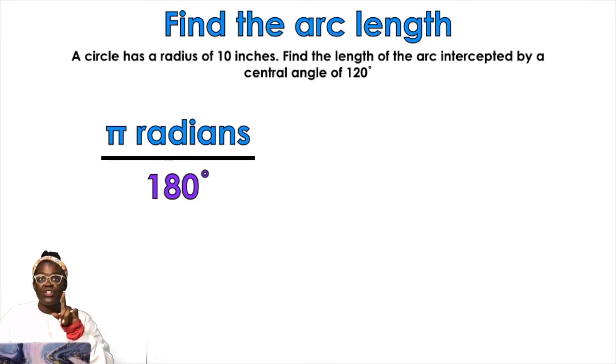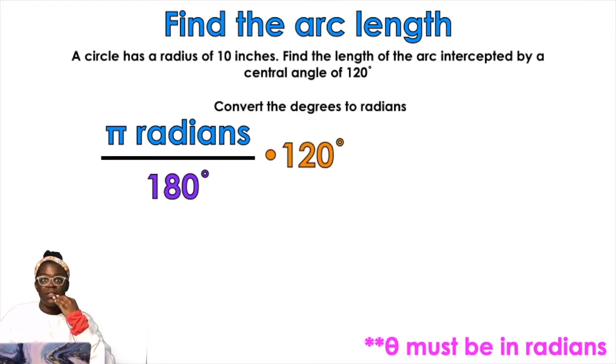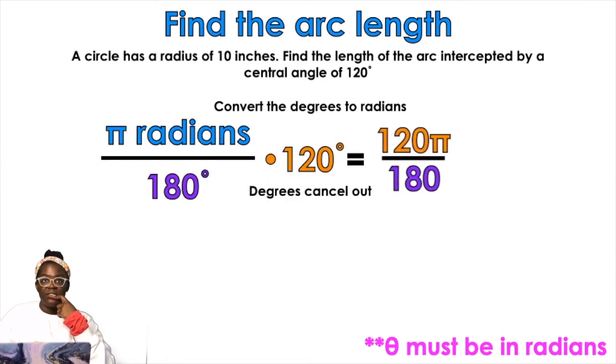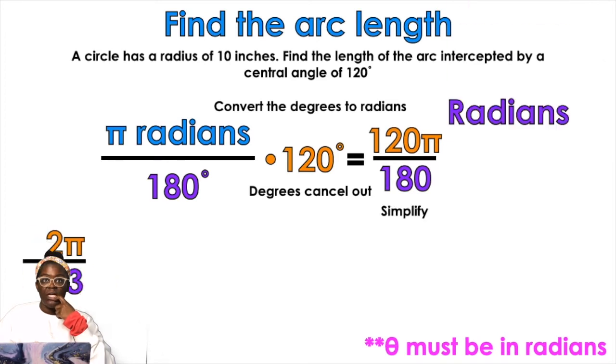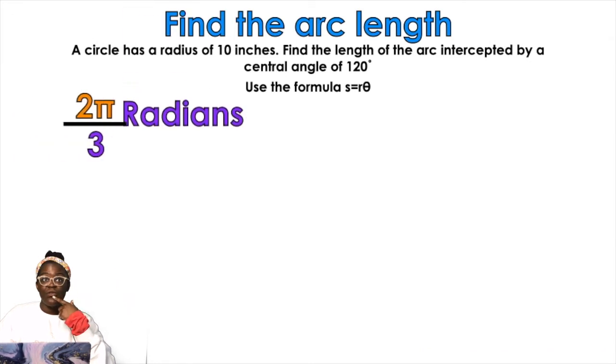So this is our conversion for degrees to radians. They gave me the angle in degrees because they're trying to be annoying. Okay, so theta must be in radians. So we're gonna convert to radians. We multiply the conversion by 120. Degrees cancel out. 120 pi over 180. We're gonna simplify, we get 2 pi over 3.